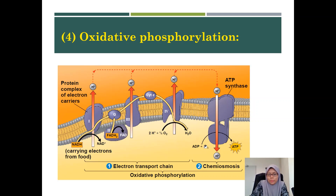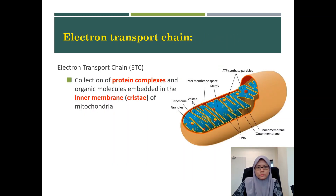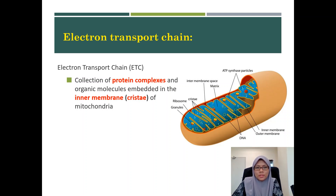Now let's look at the electron transport chain — the first mechanism of oxidative phosphorylation. The electron transport chain, or ETC, is a series of proteins that transport electrons. These are collections of protein complexes and organic molecules embedded in the inner membrane of the mitochondria.